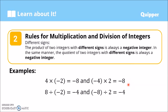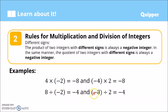The same rules apply with division. If we have 8 divided by negative 2 — positive divided by negative, different signs — the answer is negative. 8 divided by 2 is 4, so the answer is negative 4. If it's the other way around, negative 8 divided by 2 — negative divided by positive, different signs — the answer is also negative. 8 divided by 2 is 4, so the answer is negative 4.